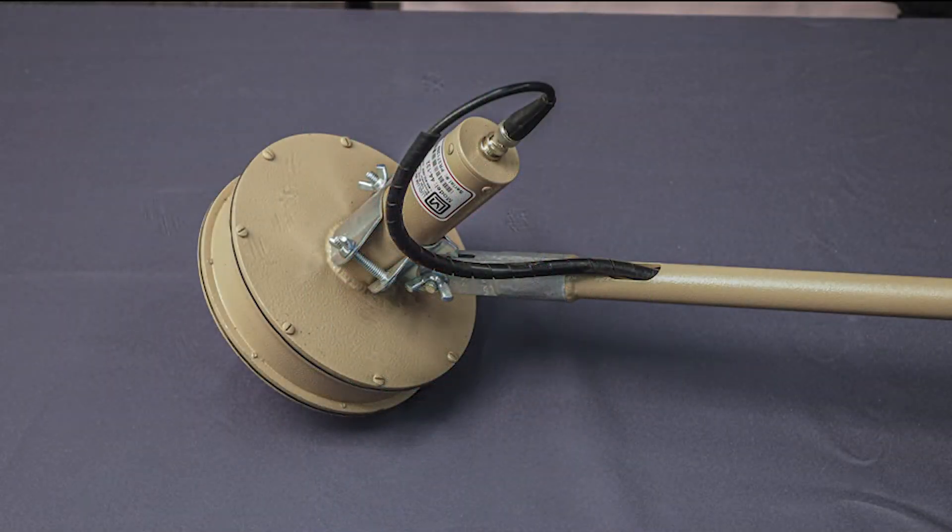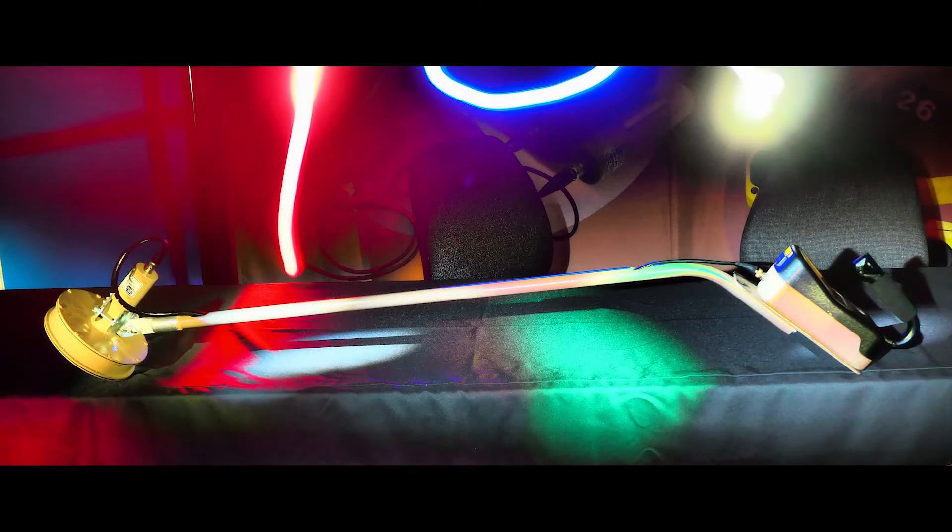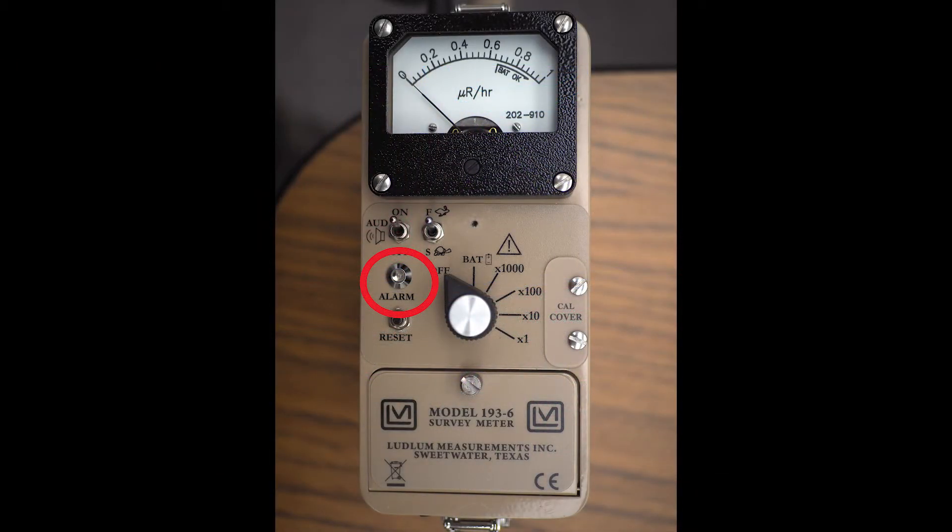The Model 193-6 has a large scintillation type detector on the end of a 4-foot long pole that provides for an extended reach. The instrument also incorporates audible and visual alarms that are automatically set by the instrument when it is powered up.